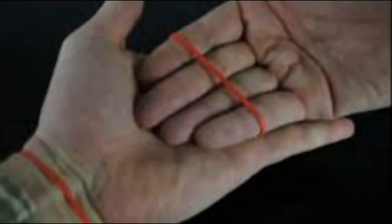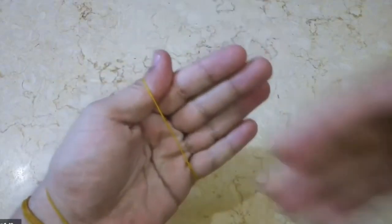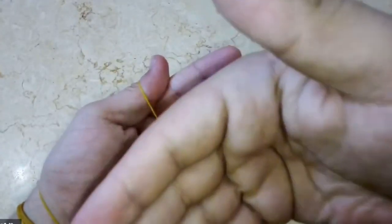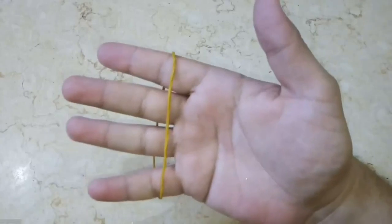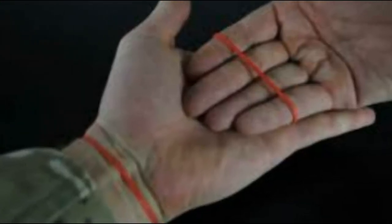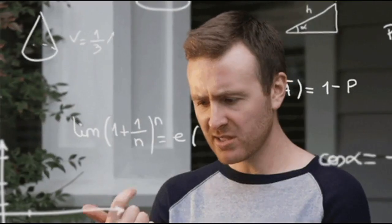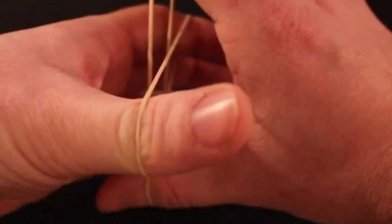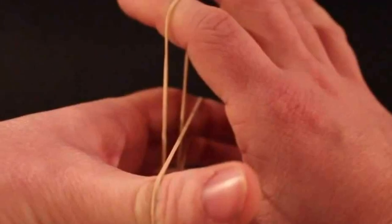The magician begins by showing the audience a regular rubber band, ensuring that it's an ordinary and flexible one. The magician takes one hand and stretches the rubber band between their thumb and index finger, creating tension within the band. They then position their other hand, palm facing down, directly above the stretched rubber band. The magician slowly lowers their other hand toward the stretched rubber band while maintaining the tension.